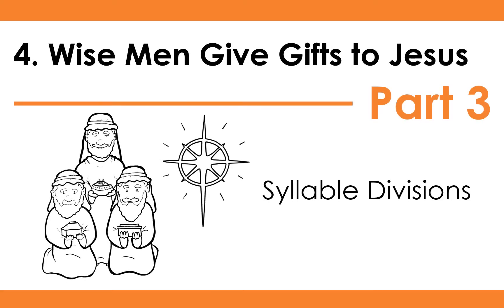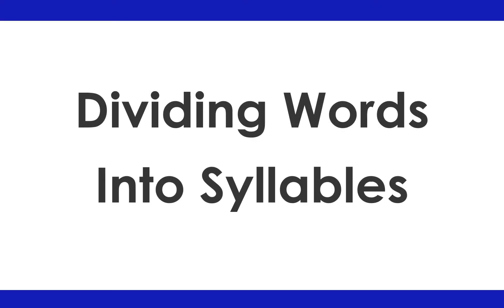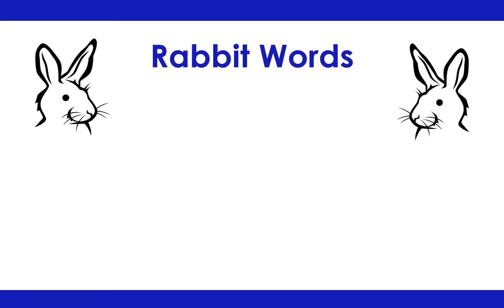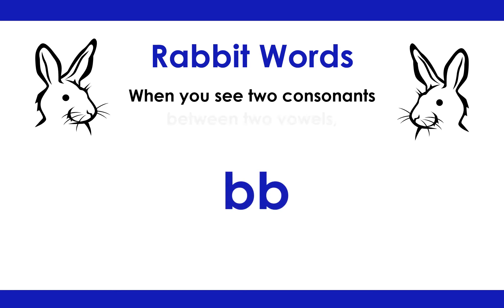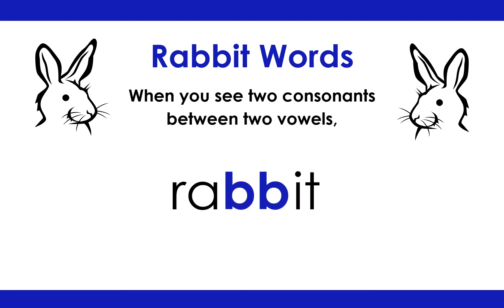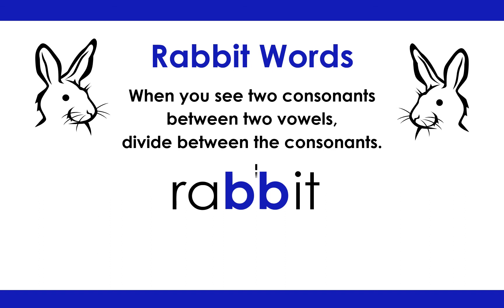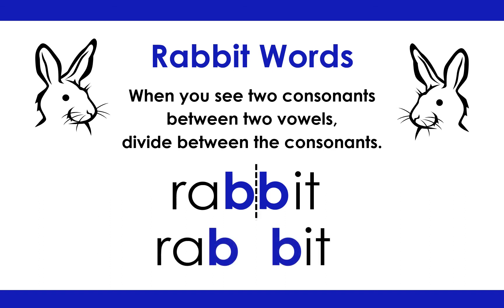Story 4: Wise Men Give Gifts to Jesus, Part 3 — Syllable Divisions. Dividing Words into Syllables. Rabbit Words: When you see two consonants between two vowels, divide between the consonants. Rabbit: Rab-bit.